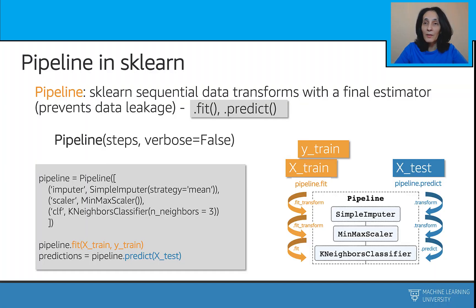The Pipeline class in sklearn is a sequential set of data transforms with a final estimator at the end, and it prevents data leakage as well. The Pipeline class allows sticking multiple processes into a single scikit-learn estimator. It has a fit and predict method, just like any other estimator. Our pipeline steps are: imputing missing values by averages, scaling the data features with a MinMaxScaler, and using the processed data to train a k-nearest neighbor with k equals 3.